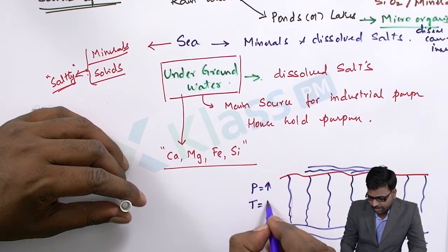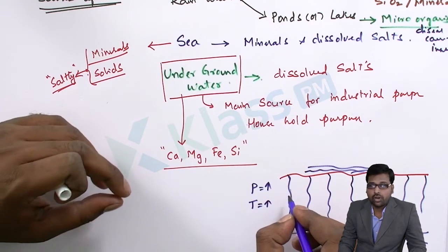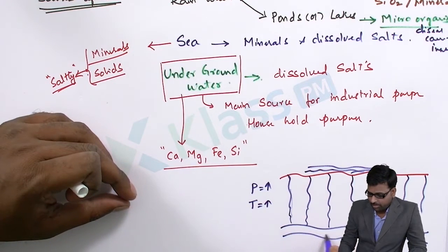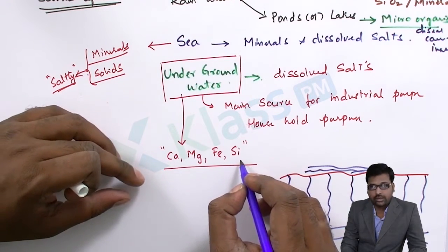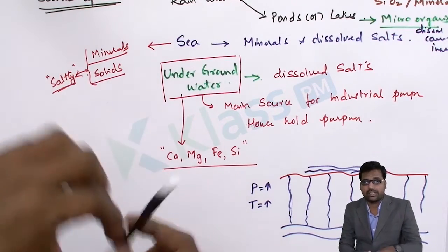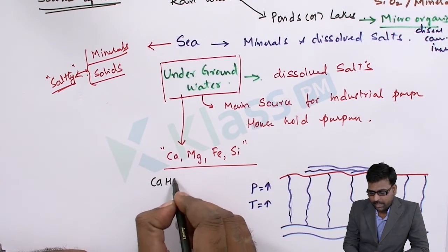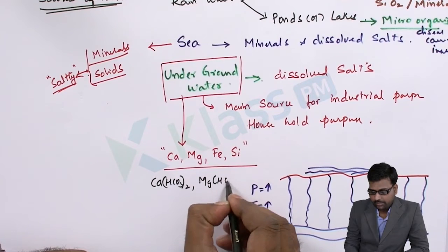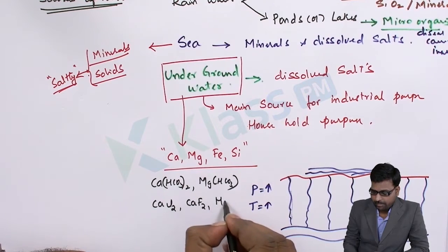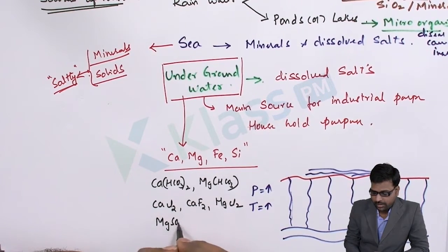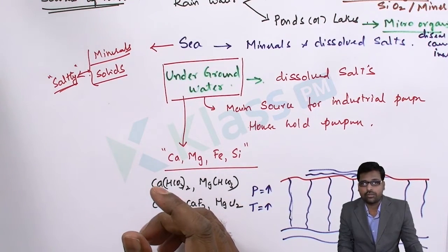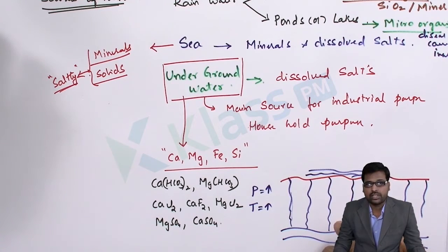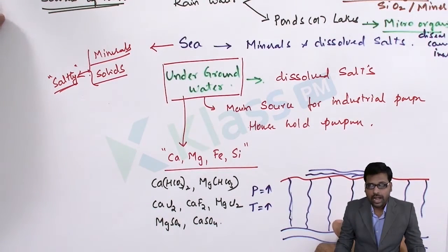Because of high pressure and increased temperatures, the water dissolves whatever salts it comes across in between, and these salts accumulate in the underground water — salts of calcium, magnesium, iron, and in some cases silica. The specific salts are: calcium bicarbonate, magnesium bicarbonate, calcium chloride, calcium fluoride, magnesium chloride, magnesium sulfide, and calcium sulfide. These salts are the main hardness-causing salts of underground water, which is the main source for industrial purposes.